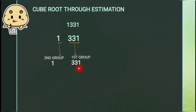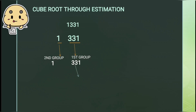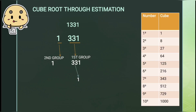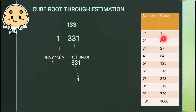So first of all we will look at the first group and see the ones digit of the first group. Here it is 1. It means that the ones digit of the cube root of the given number will be 1. We know that if a number has 1 at the ones place, its cube also ends with 1. So we will take 1 here.